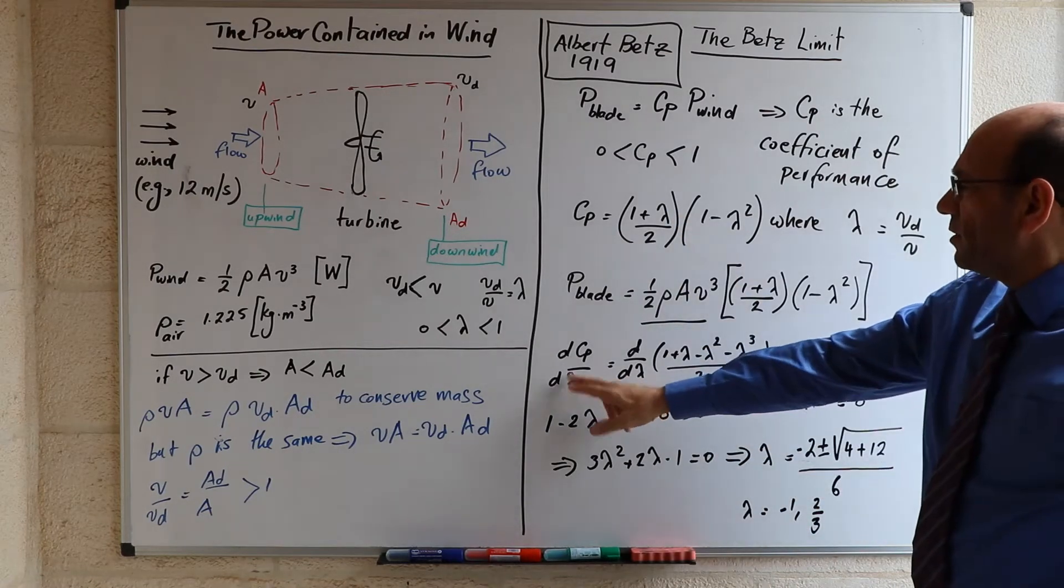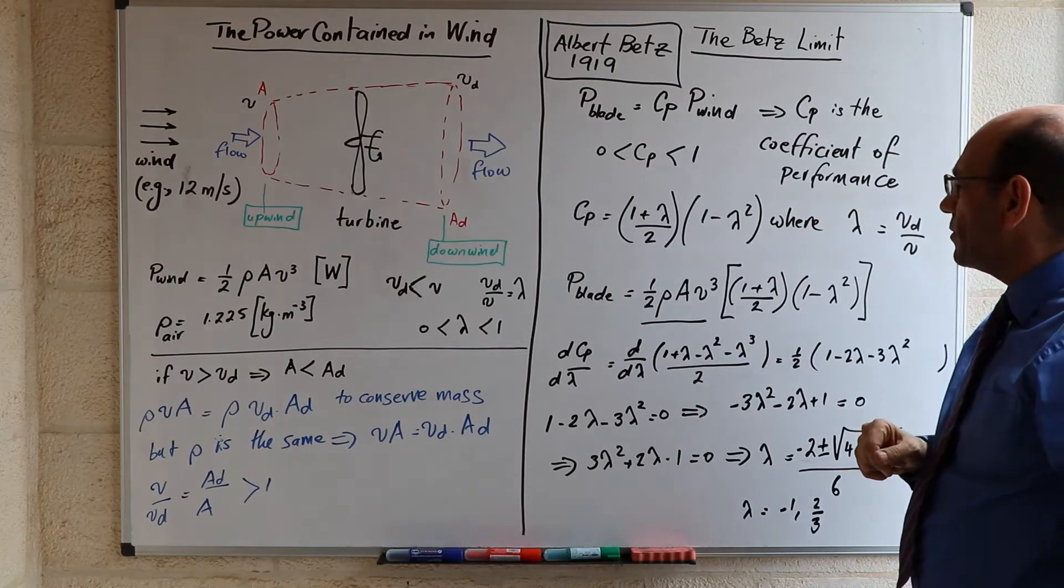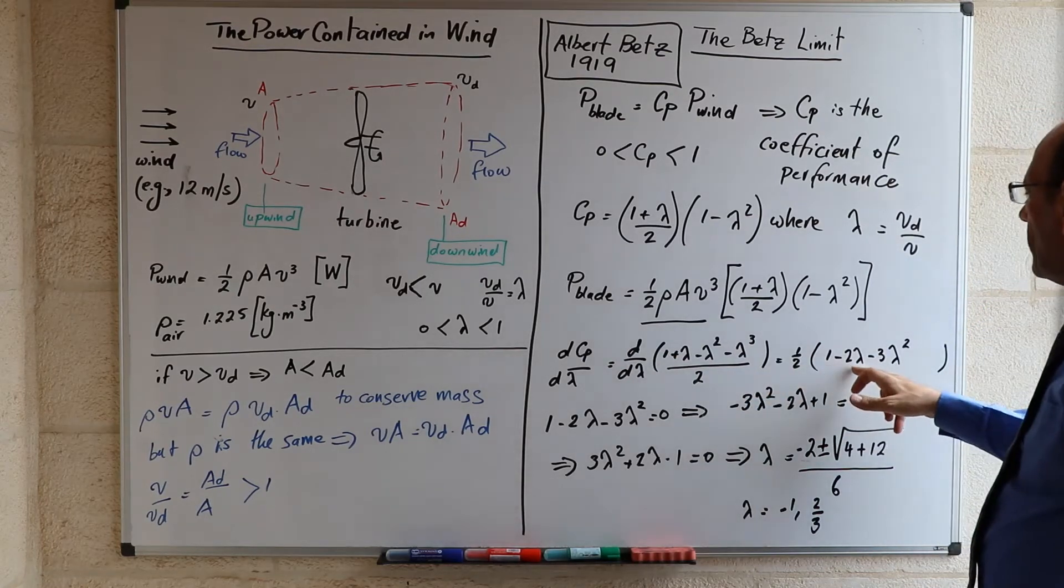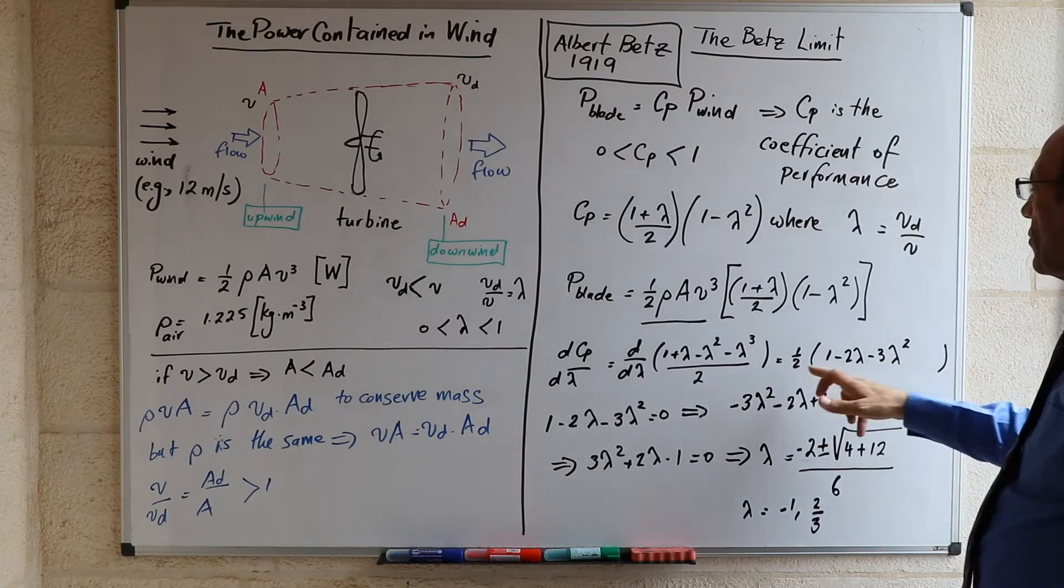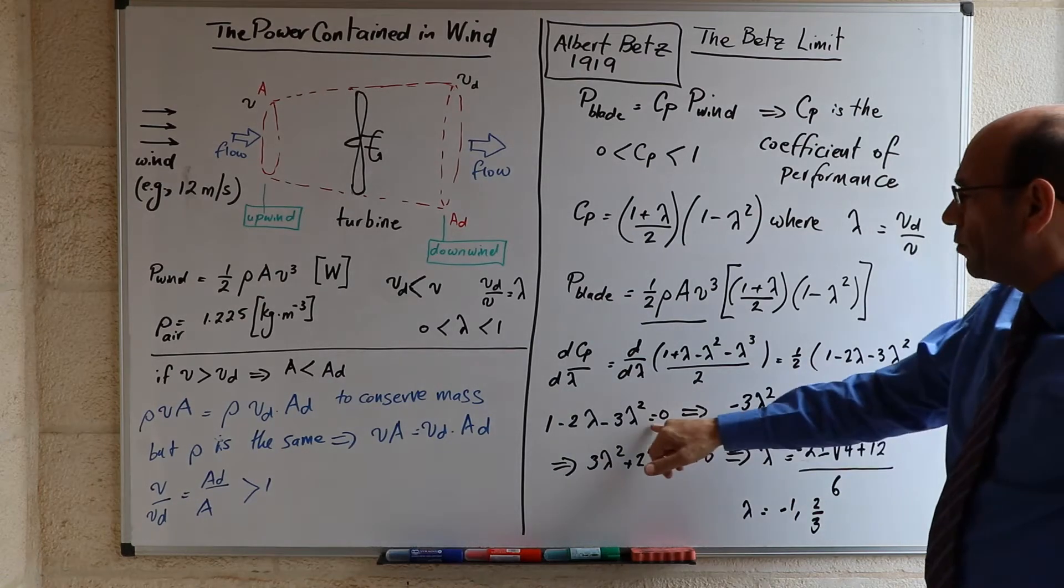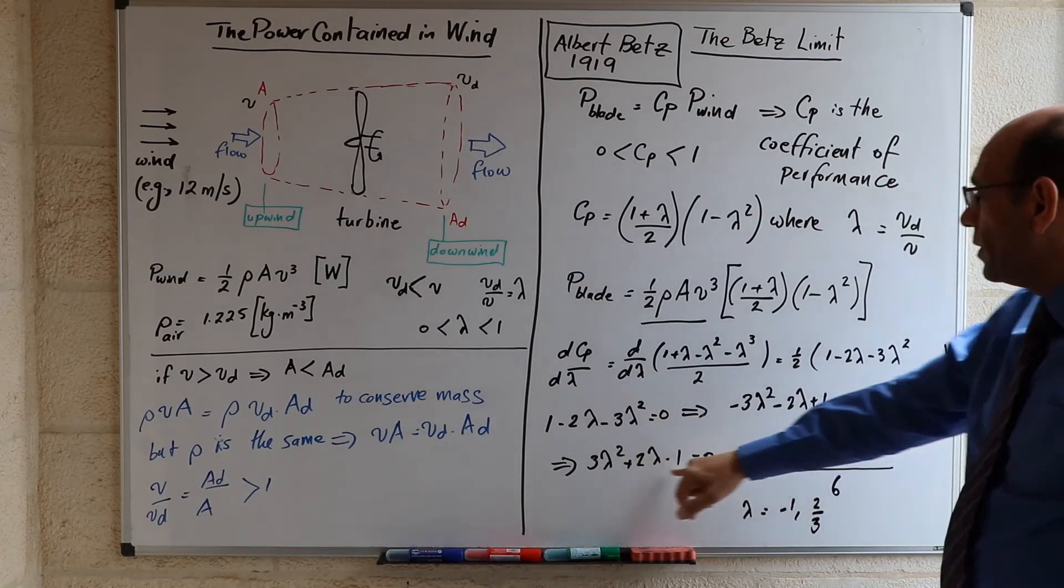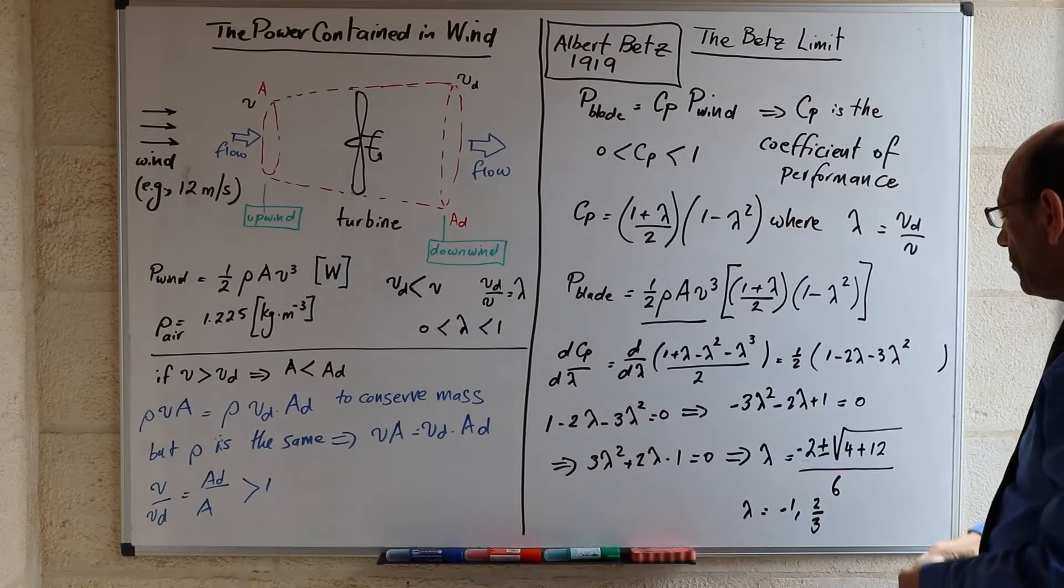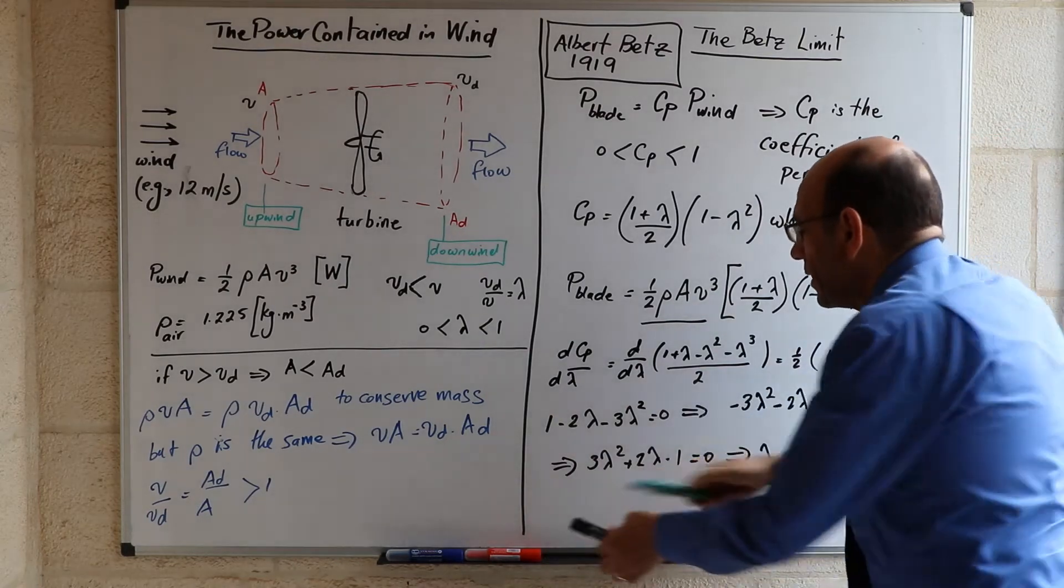This gives us the derivative of CP with respect to lambda is 1 minus 2 lambda minus 3 lambda squared by half. We equate this to zero, we rearrange and we end up with these two possible values of lambda.